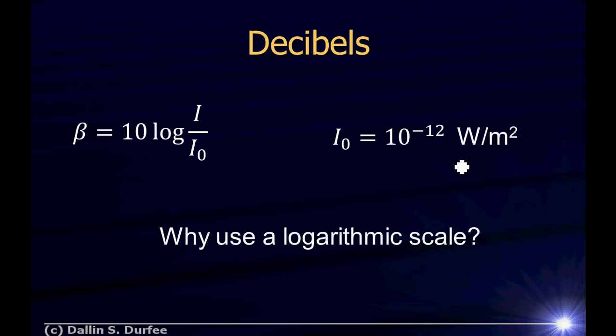Now, everybody's ears are a little bit different, but kind of on average, if the sound intensity is less than that, most people can't hear it. If it's greater than that, most people can. So that's why we call it the threshold of hearing. So the idea with the decibel scale is we divide the intensity by this level, take the logarithm, multiply it by 10, and that gives us the sound level in decibels.